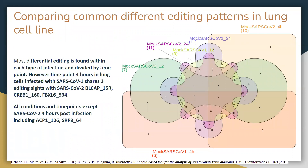Looking at all the editing site status in the excitome, we find most editing sites are unique to the time point or infection status, meaning that they may be stochastic. But we do find three sites edited in both SARS-CoV-1 and 2 four hours post infection: BLCAP, CREB-1, and FBXL-6. Then we found two more that are common between all of the conditions: ACP-1 and SRP-9. All five of these shared sites can serve as potential biomarkers that need to be studied further to determine their role in the pathology of SARS infections.